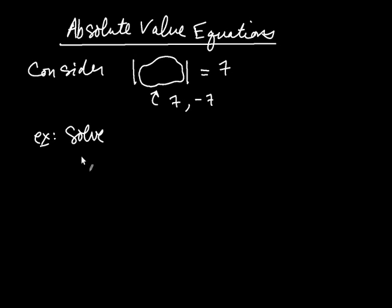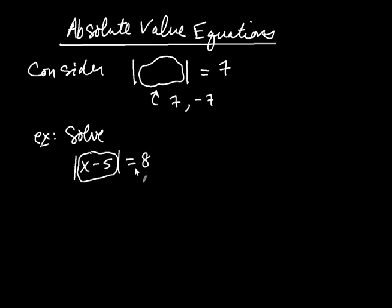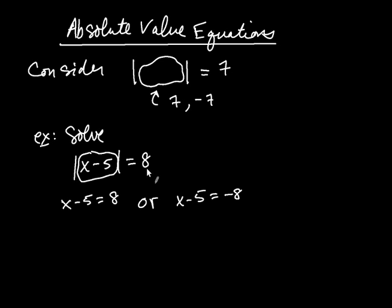Let's solve the absolute value of x minus 5 equals 8. The same logic applies — you're taking the absolute value of something, so this whole expression inside has only one of two options: either the whole thing equals 8 or the whole thing equals negative 8, because only when you take the absolute value of 8 or negative 8 do you get positive 8. So either x minus 5 equals 8, or x minus 5 equals negative 8. You take what's inside the absolute value and set it equal to positive 8 or negative 8. These resulting equations no longer have the absolute value symbol — that's the whole point.